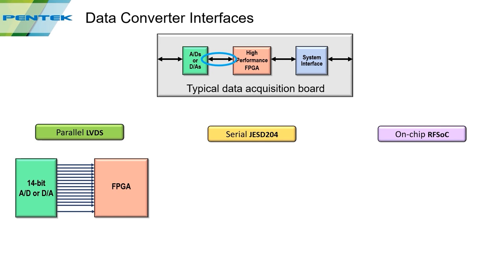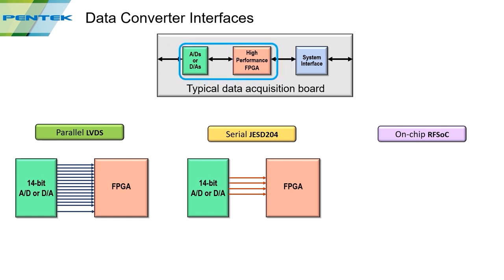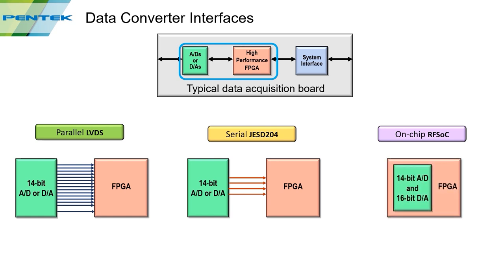Looking at the serial interface, there are fewer signals, but these are gigabit serial lines running at much higher rates, so you can move more data over fewer lines. With the RFSOC solution, the ADC and FPGA are all in one IC, so there are no external signal routing requirements — everything is self-contained.